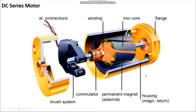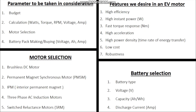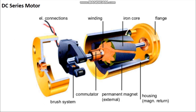Let's start with the series motor. This motor is not in the main topic list, but I'm covering it because all motors mostly have a similar structure. In series motors we have a brush system, commutator, permanent magnet, housing, core winding, and so on. This type of motor was initially used in Tesla, from what I've read.